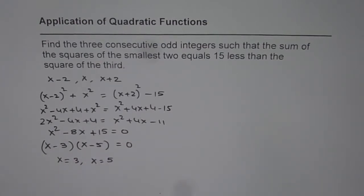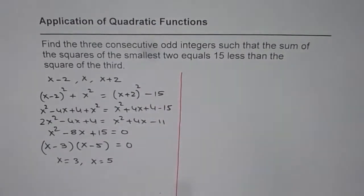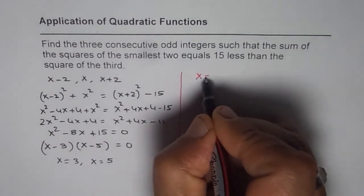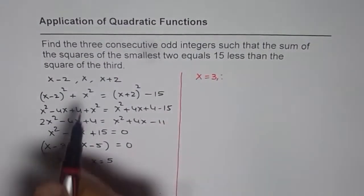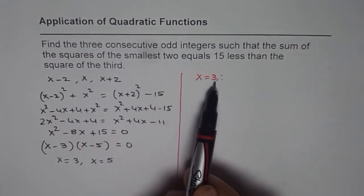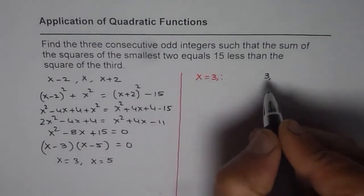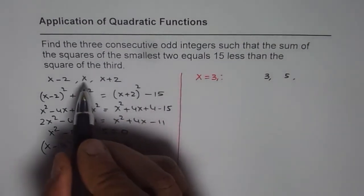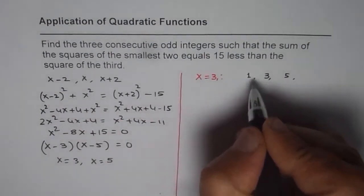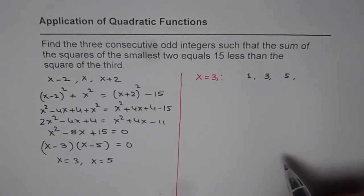So these are two different answers for x. Let us check whether they work. Let us say x = 3. In that case, what are the integers? If x is 3, the integers are 3, 5 (which is 2 more), and 1 (which is 2 less). So these are the three integers.